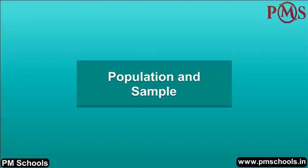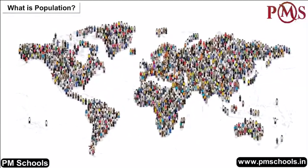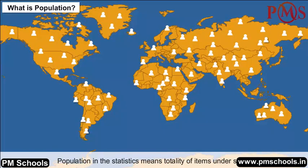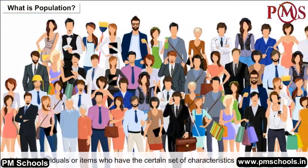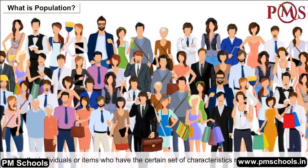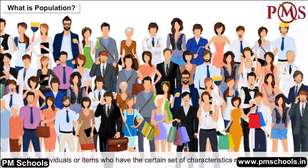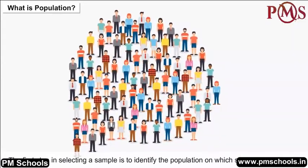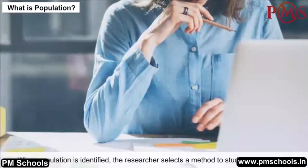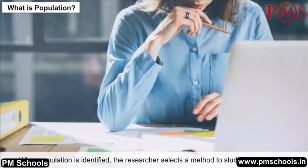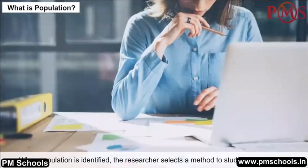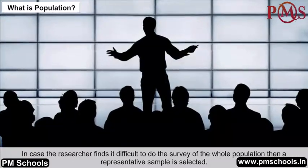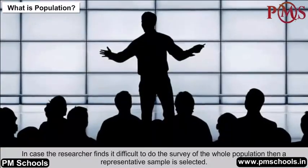Population and Sample: In statistics, population means the totality of items under study. It refers to individuals or items that have a certain set of characteristics required for the survey. The first step in selecting a sample is to identify the population on which the survey is to be done. If a researcher finds it difficult to survey the whole population, a representative sample is selected.